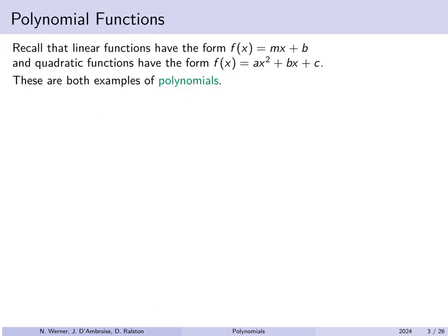Remember that a linear function is of the form f(x) = mx + b, and a quadratic function has the form f(x) = ax² + bx + c. This is the slope-intercept form of a line and the standard form of a parabola respectively. They're both examples of polynomials.